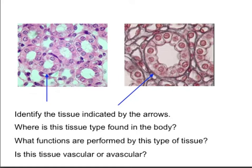Is this tissue avascular or vascular? This particular tissue is vascular. Kidney tubules are in close proximity to capillaries because they engage in a lot of secretion and absorption with the blood. As a result, they don't want to be too far away from the circulatory system, so we're looking at vascular tissue.